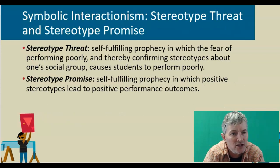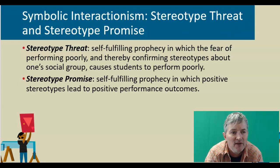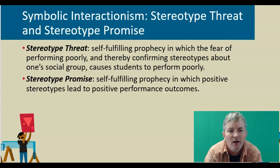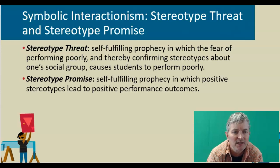Symbolic interactionism also takes into consideration stereotype threat and stereotype promise. The stereotype threat is a self-fulfilling prophecy in which the fear of performing poorly and thereby confirming stereotypes about one's social group causes students to perform poorly. The stereotype promise is a self-fulfilling prophecy in which positive stereotypes lead to positive performance outcomes.